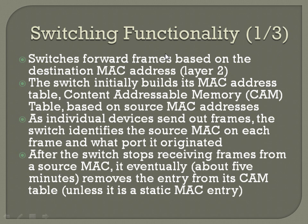The switch initially builds its MAC address table — the Content Addressable Memory, or CAM table — based on the source MAC addresses. An individual device sends out frames, and the switch identifies the source MAC on each frame and what port it originates from. After the switch stops receiving frames from a source MAC, it eventually — about five minutes usually — removes the entry from its CAM table, unless it's a static MAC entry.